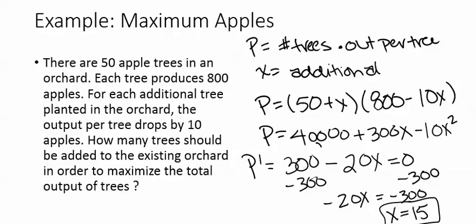Before we assume that 15 is our final answer, we should check our endpoints. Now it doesn't say that there is a maximum of how many extra trees we could add. But we want to check what happens if you only added zero trees. So what you would do is you would go back to your production equation. You would find out if x equals 15, how many total apples would you get. And then you would also check what happens if you added zero extra trees and see what value was higher.